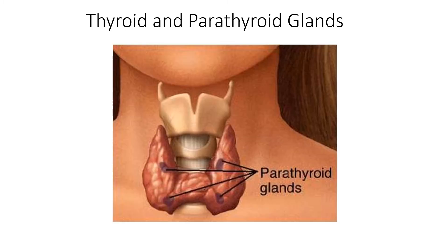Let's first talk about the thyroid gland and its location. The thyroid gland is a butterfly or bow-tie shaped gland that wraps around the front and sides of the trachea. You can see in this image there are also four to eight nodules of parathyroid glands that wrap the backside of that thyroid gland. Now, if someone is to have their thyroid gland removed, those parathyroid glands should not be brought along as well, because that can cause problems with calcium regulation, as we'll soon discuss.